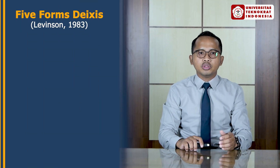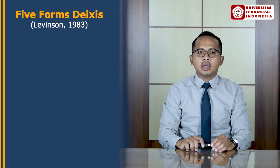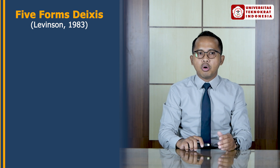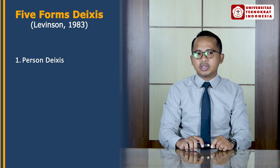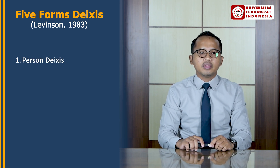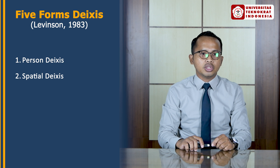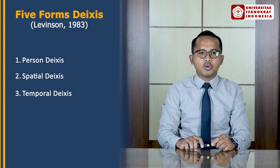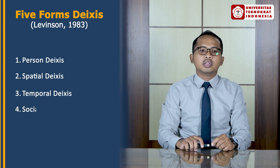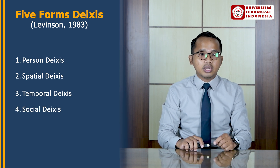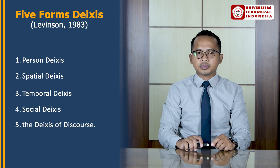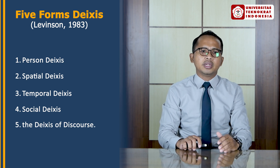Now we move on to the second part of the discussion: types of deixis. According to Levinson, deixis has five forms. The first one is person deixis, the second is spatial deixis, the third is temporal deixis, the fourth is social deixis, and the last one is the deixis of discourse. Let's discuss them one by one.